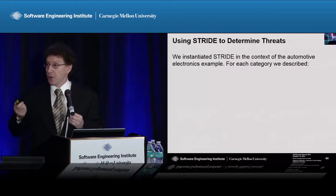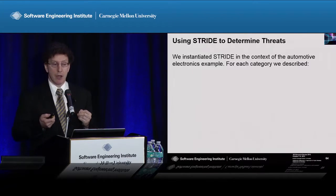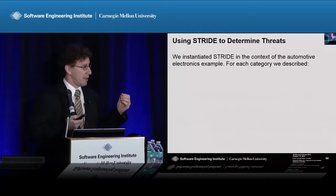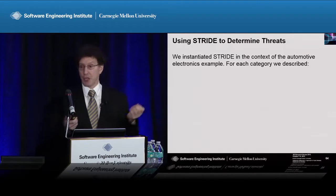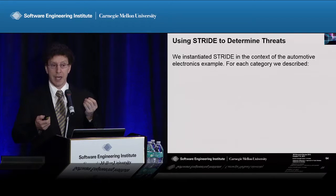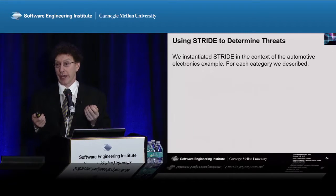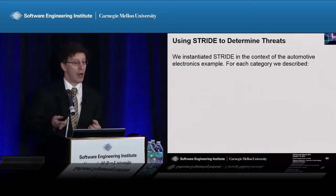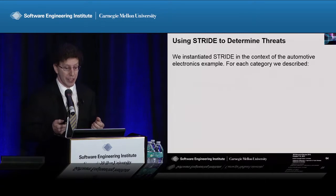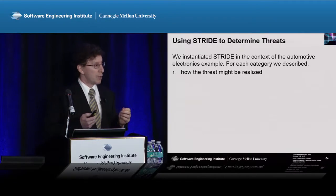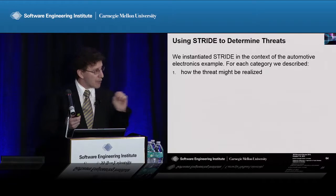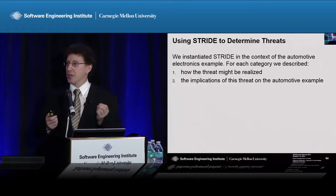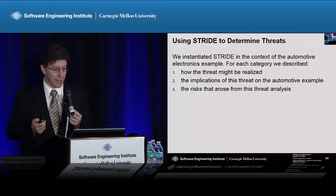Over the course of several sessions, we instantiated each of these threats, because spoofing, information disclosure, or denial of service is a category, and we had to create an instance of this category in the context of our automotive electronics problem. For each one, we specified how the threat might be realized and the implications on automotive electronics.